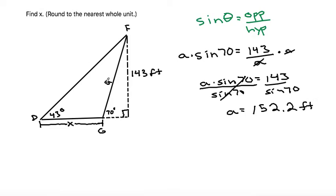So this side length right here is 152.2 feet. Next, we have, we know this 43, we know this side length, we're looking for this X. So if we had a relationship between opposite angle and side length, we could solve for X if we could find this angle here.